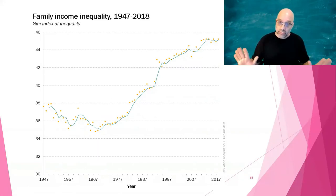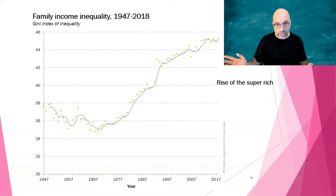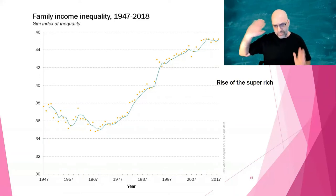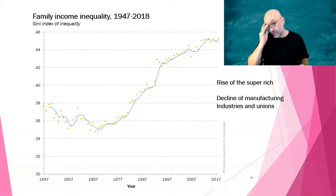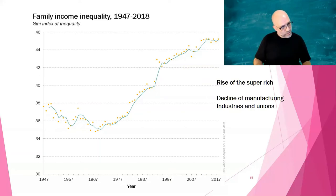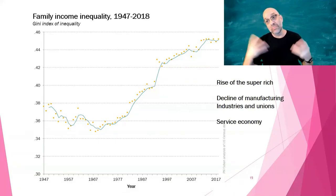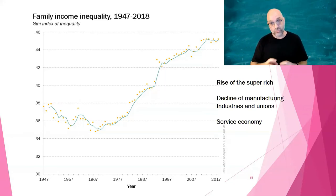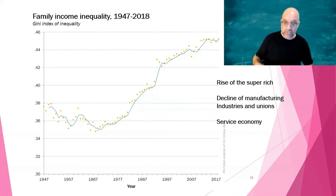I can give a few of the main reasons inequality has increased. Number one, at the very top, we're aware of the rise of the super rich — Bill Gates, Jeff Bezos, certain celebrities — but even outside famous people, top executives, bankers, and lawyers have seen their incomes rise a lot. Also, a decline of manufacturing industries and unions: manufacturing was where you could get a middle-income job without a lot of education. When those declined, inequality increased. Some of that is because the service economy is bifurcated — you have high-income jobs like airplane pilots and doctors, and low-income jobs like cashiers and janitors, with fewer middle-income jobs mitigating overall inequality.